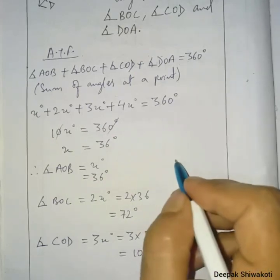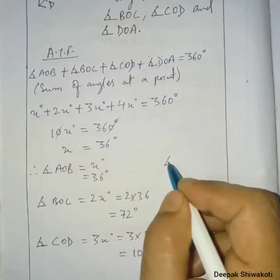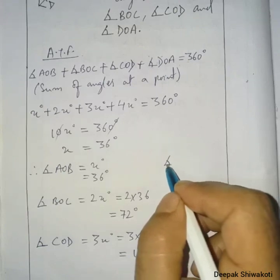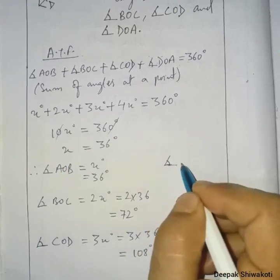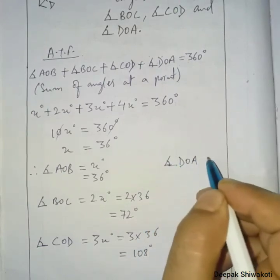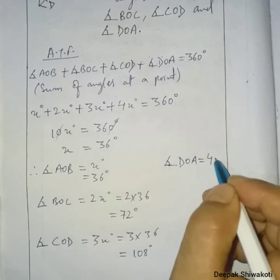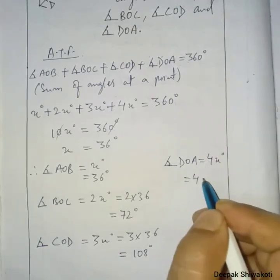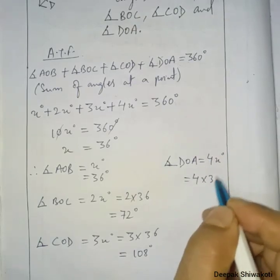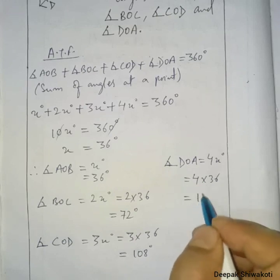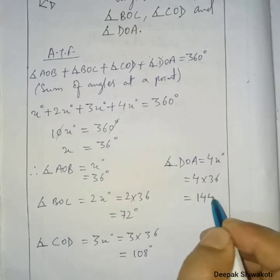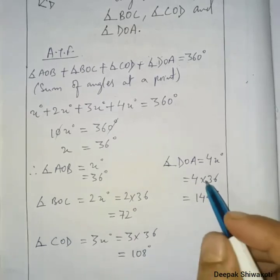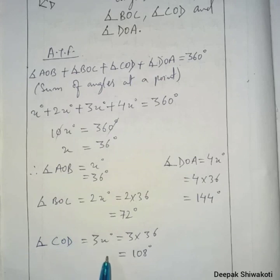Angle DOA equals 4x degrees, which is 4 times 36 equals 144 degrees. We have now found each of the angles asked in the question.